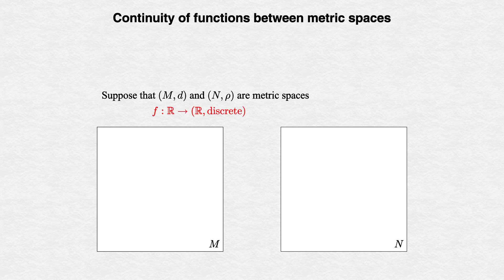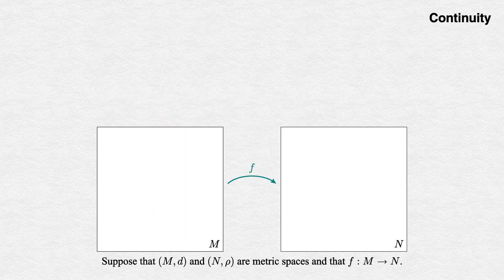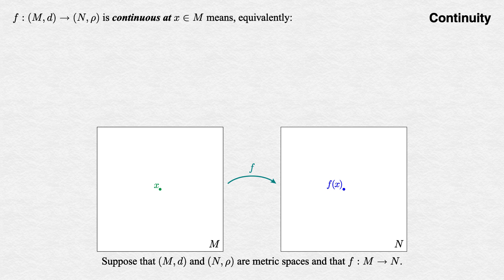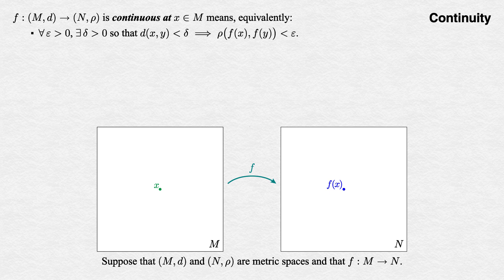For example, we could have a function f from the real line into the set of real numbers with the discrete metric, or vice versa. Let f be a function from M to N. If x is a point in our domain, then f(x) is a point in our codomain, and the definition of f being continuous at x is the direct translation of our definition in the real line: for all epsilon greater than 0, there exists delta greater than 0, such that d(x, y) < delta implies ρ(f(x), f(y)) < epsilon.